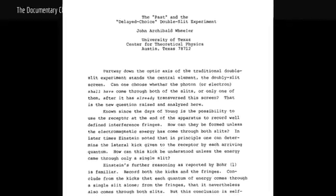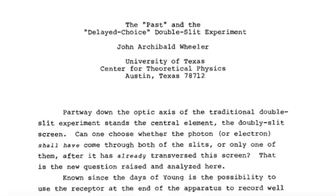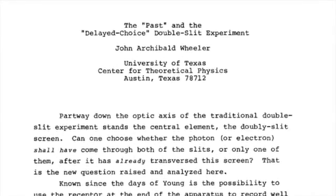In 1978, physicist John Wheeler proposed a new way of doing the double slit experiment that might finally reveal what's really happening. He proposed what is called the delayed choice experiment, in which the decision of whether or not to observe the particles isn't made until after they have gone through the slits, but before they've impacted the detector.